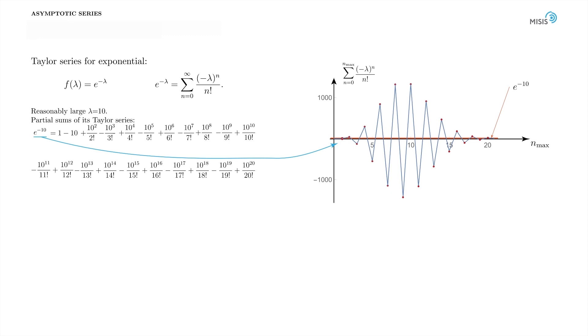But it takes 20 terms to get the answer with reasonable accuracy. Let's analyze what we have just seen. First, the partial Taylor sums are extremely inconvenient as a way of representation of our function due to their oscillating nature. The actual value of the function is the result of a tiny mismatch in subtraction of big terms.